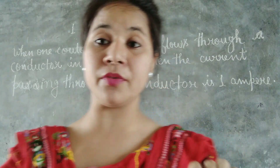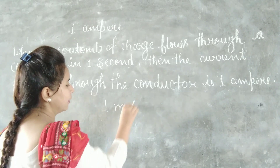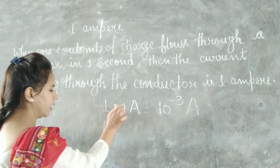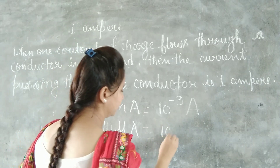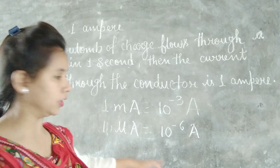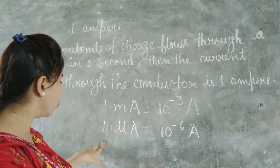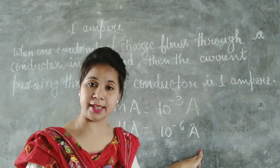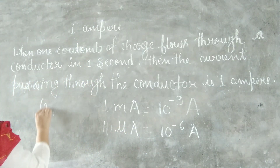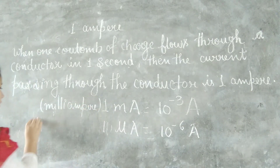Now let's look at the relation between some other units of electric current. 1 milliampere is equal to 10 to the power minus 3 Ampere, and 1 microampere is equal to 10 to the power minus 6 Ampere. These unit conversions help you solve numerical problems.